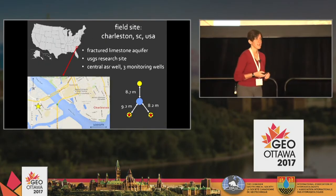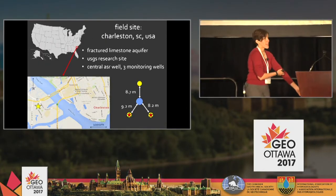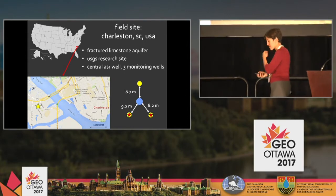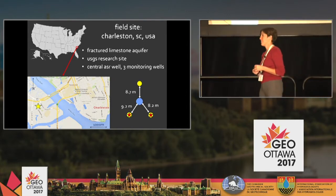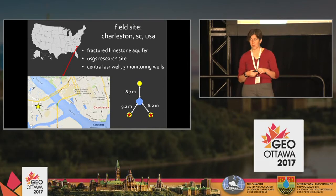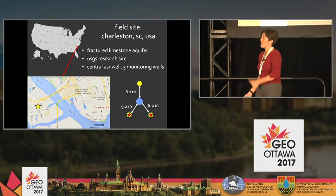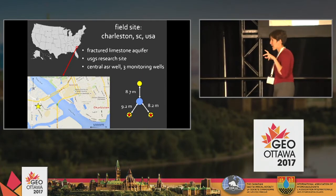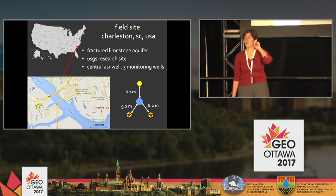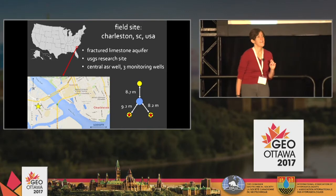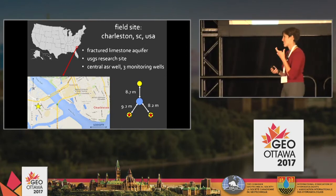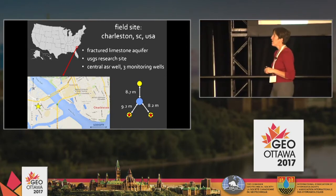Charleston, South Carolina has a history of hurricanes and this is an emergency water supply system. This is a USGS research site, which made it an easy place to work. I'm going to show data from an aquifer storage recovery well in a fractured limestone aquifer about 100 meters below land surface, with three observation wells all within 10 meters. I'll show data from two of the wells — the third wasn't hydrologically connected.